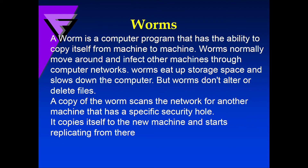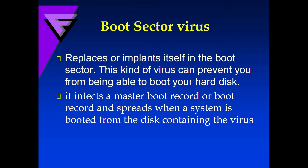Worms are computer programs that have the ability to copy themselves from machine to machine. They normally move around and infect other machines through computer networks. Worms eat up storage space and slow down the computer, but they don't alter or delete files. A copy of a worm scans the network for another machine with a specific security hole, copies itself there, and starts replicating.